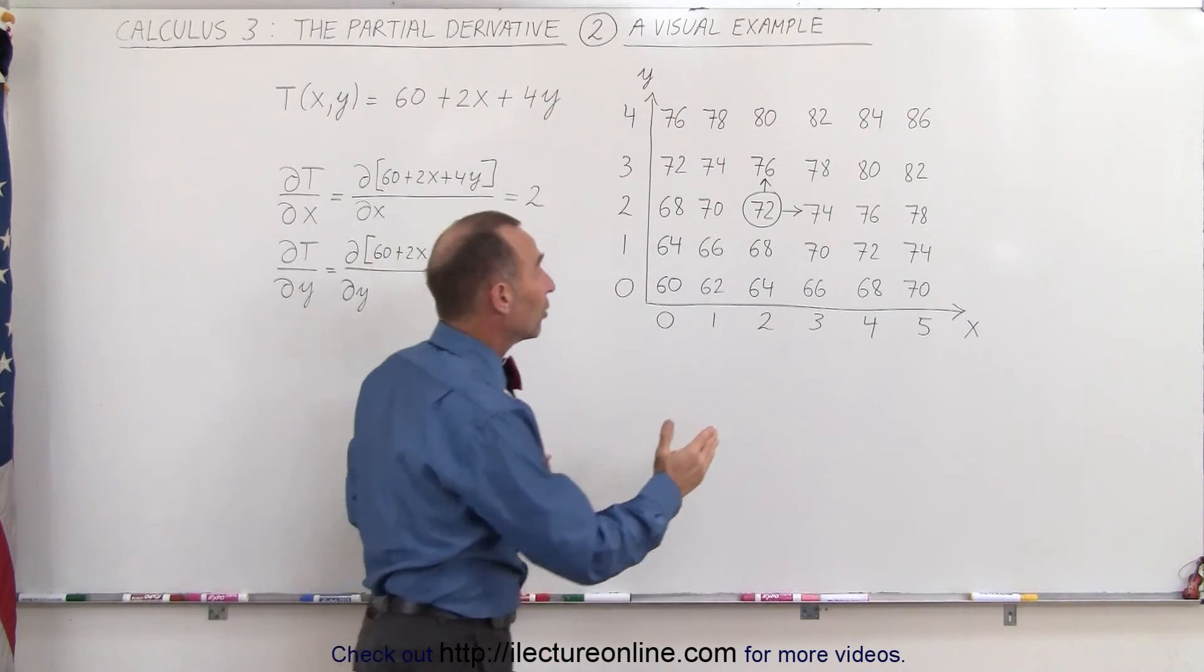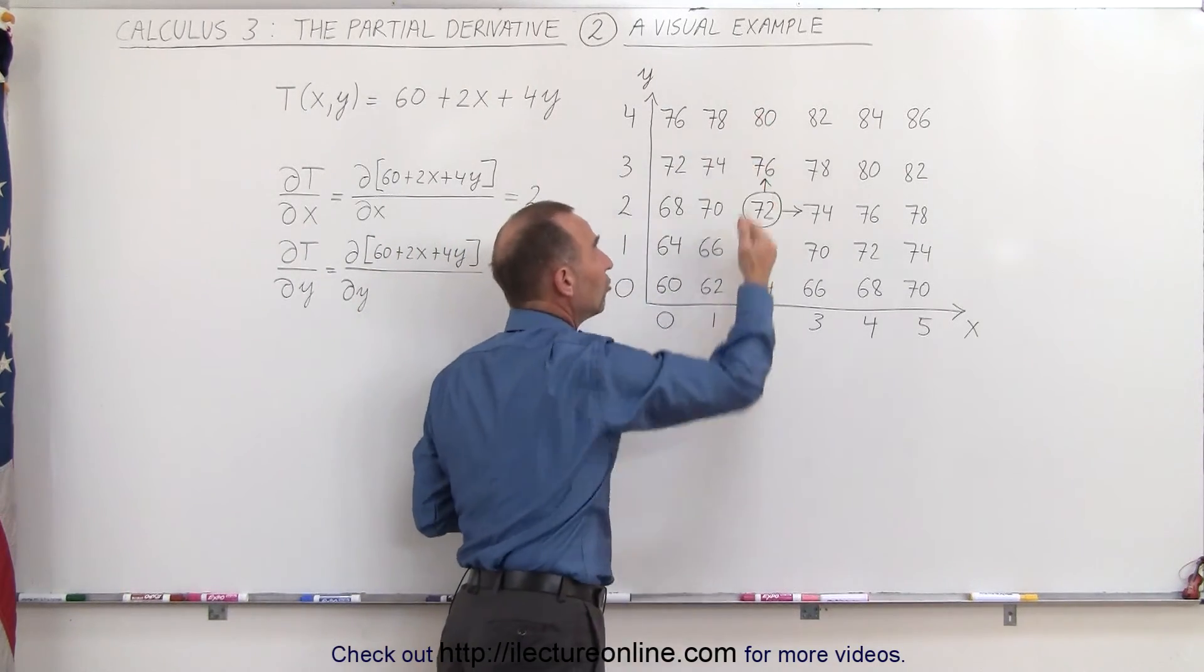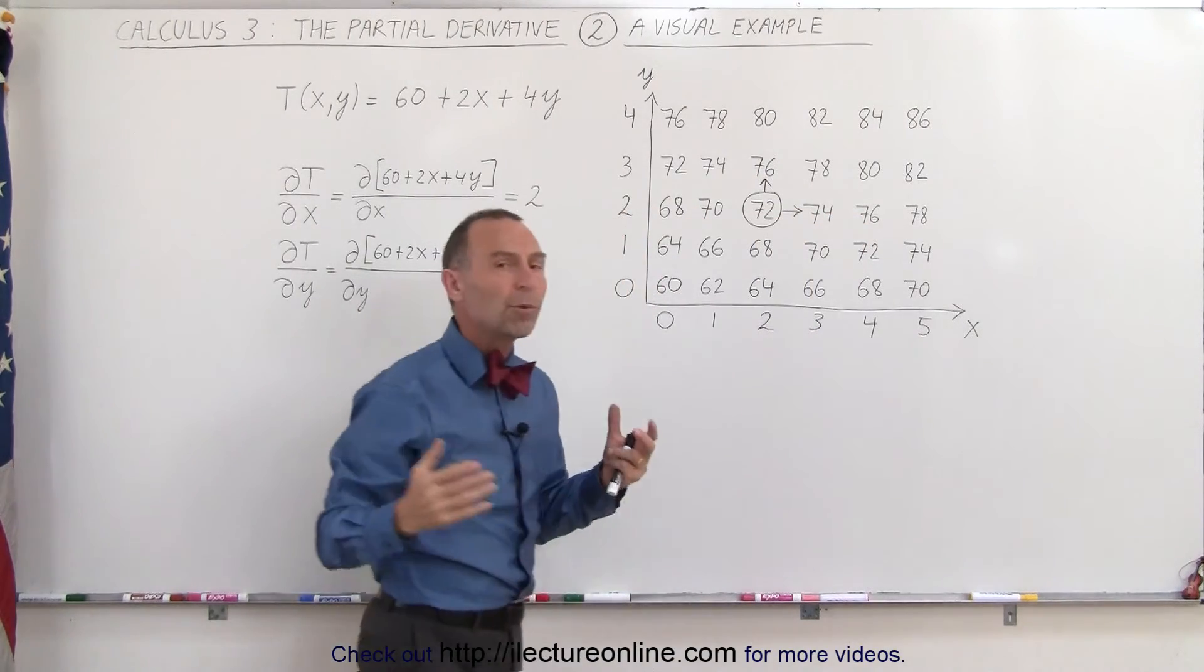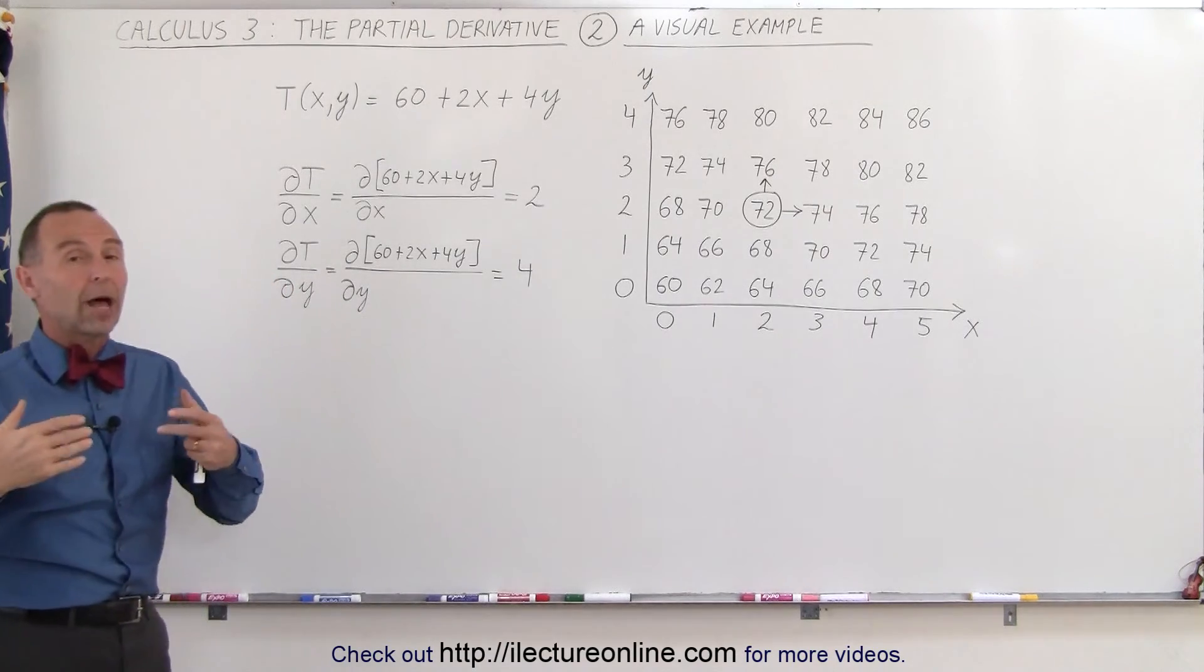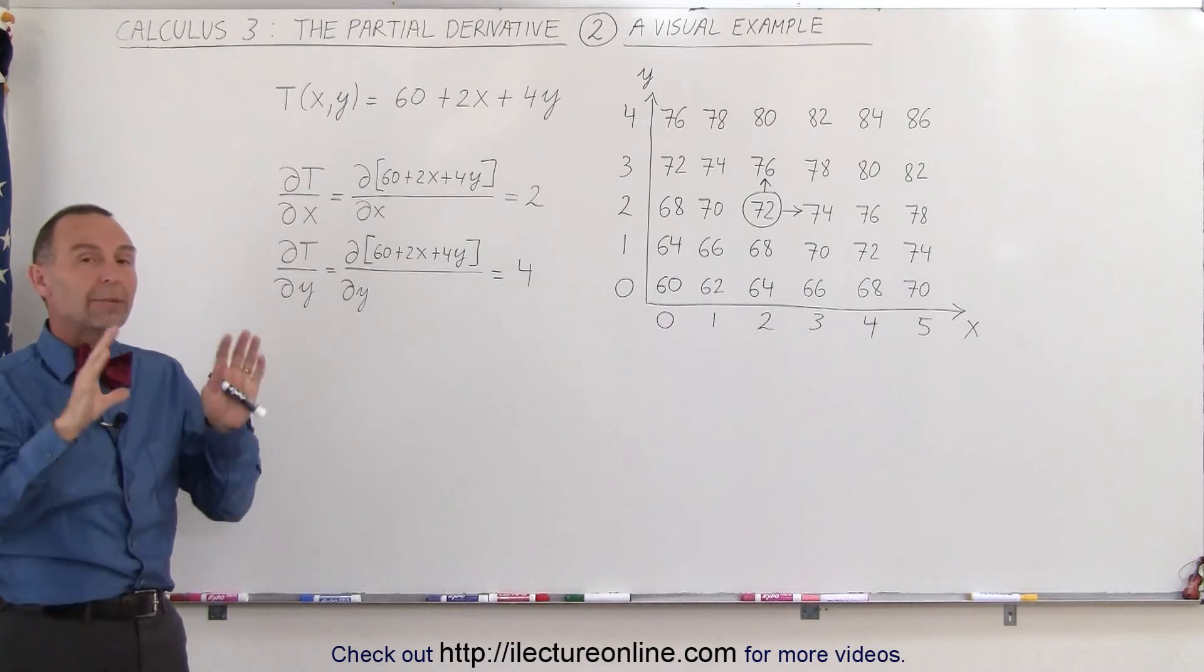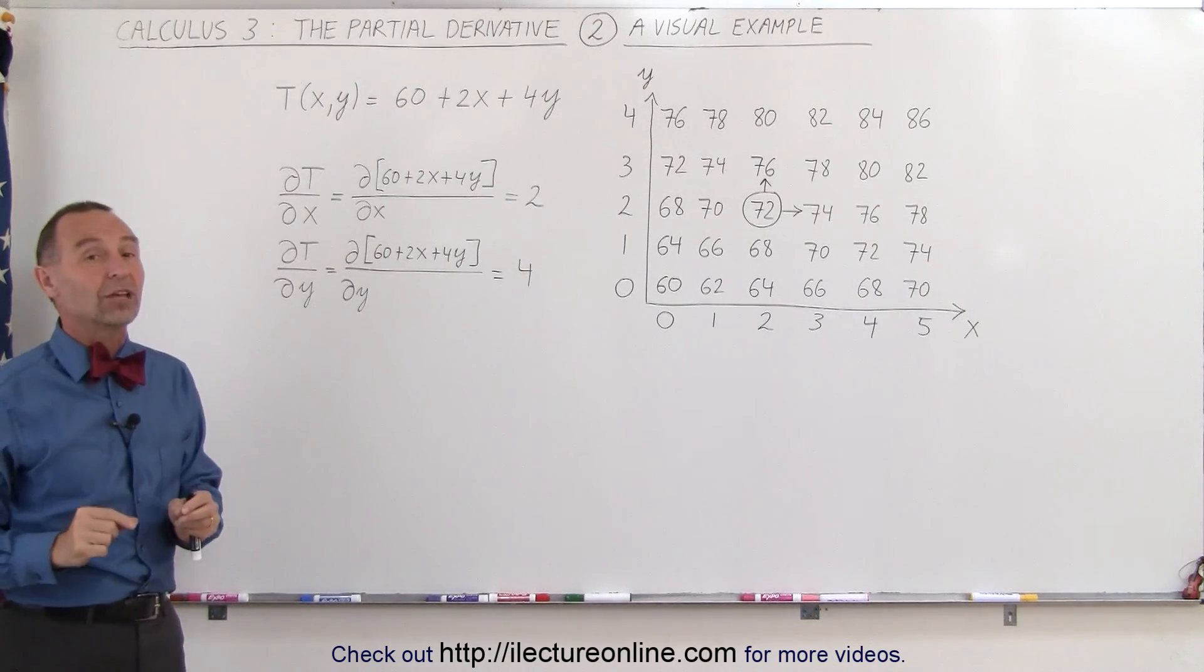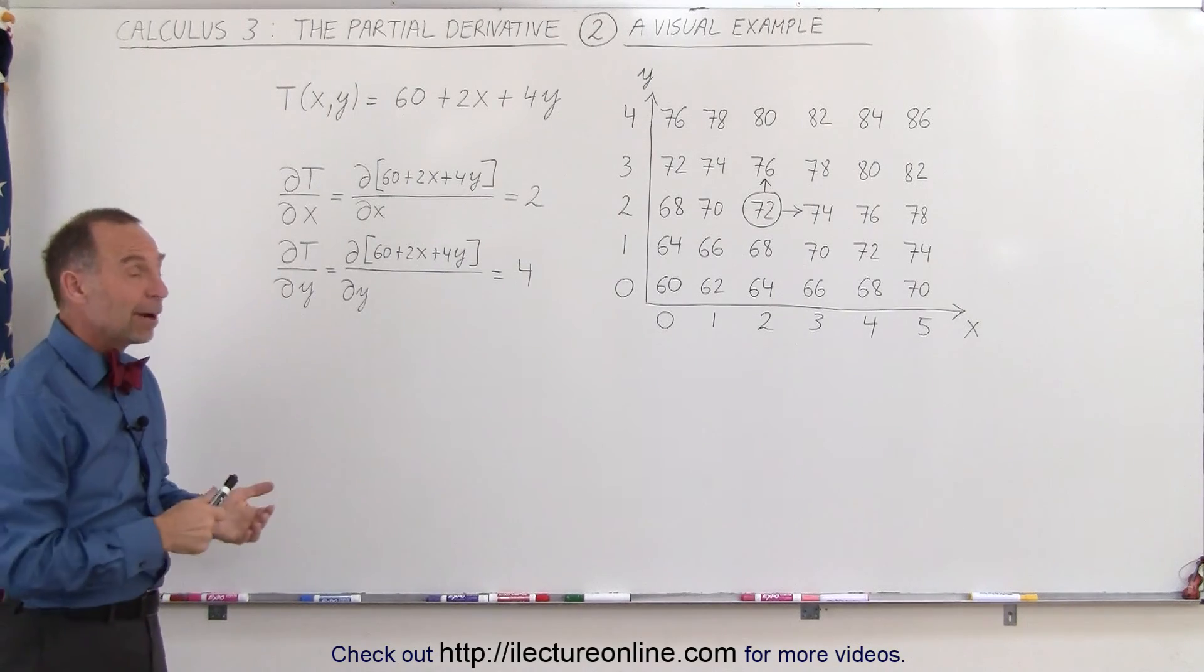Again, keeping x constant, we only allowed y to change, and if we keep y constant, we only allow x to change. And that's what we mean by a partial derivative. It allows us to find out how the function changes when we keep all the other variables constant, and we only allow one of the variables to change. That's what we mean by partial derivative.